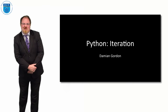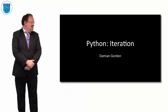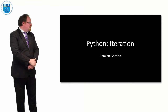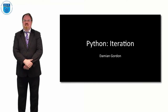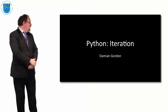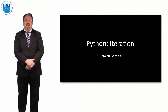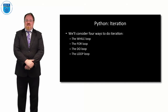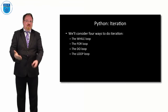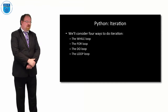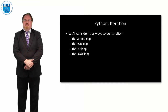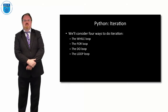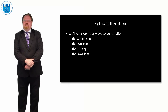Hello everybody and welcome to this episode of Programming and Algorithms. In this episode we're going to look at how Python implements iteration. We looked at different kinds of loops in iteration - while, for, do, and the loop loop. As it happens, Python doesn't implement a lot of these, but different programming languages do. So it's important that you have an awareness of the range of functions that programming languages have.